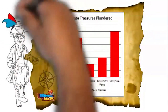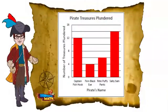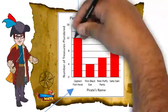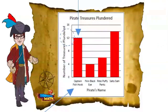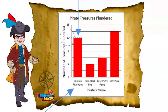It tells how many treasures we plunder. Just look at the bar above each of our names, then follow the line across and read the number on the left. If the bar goes up to a line without a number, you will have to interpolate to figure out what the number should be.